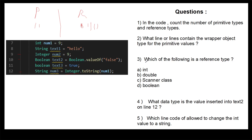Question three asks which of the following is a reference type. We identify this by checking for a capital first letter. 'int' is primitive — remove it. 'double' has no capital — primitive. 'boolean' has no capital — primitive. The Scanner class is created with a capital S, so Scanner is our reference type.